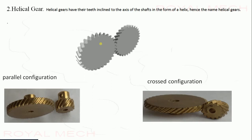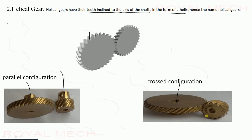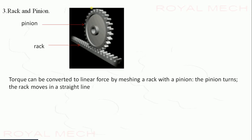In a helical gear, the teeth are inclined to the axis of the shaft in the form of a helix — hence the name helical gear. There are two types of configuration: parallel configuration, where the axes of the shafts are parallel, and crossed configuration, where the axes of the shafts are in different planes.